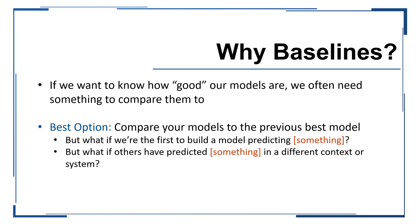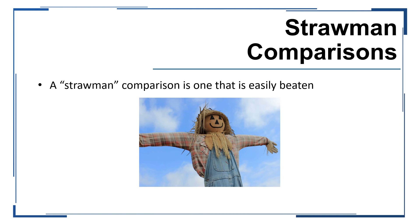But of course, this isn't always feasible. What if we are the first to try to predict our dependent variable? Or what if others have predicted this but in different contexts where the two approaches aren't directly comparable? In these cases, we may need to identify other reasonable baselines. If there are other alternatives, it's generally recommended to avoid solely making strawman comparisons, but certain simple modeling approaches may still provide interesting insights.